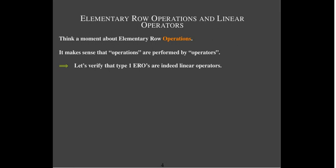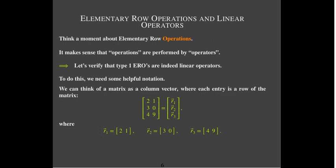Type 1, if you remember, just replaces a row of a matrix with some scalar times that row. To think about this correctly — normally we think about elementary row operations working on matrices and we think of operators working on column vectors — so let's just think of a matrix as a column vector of rows.